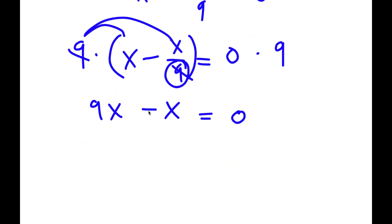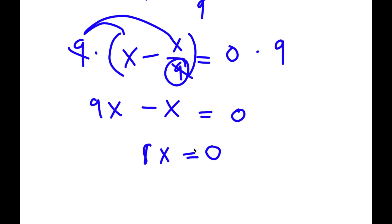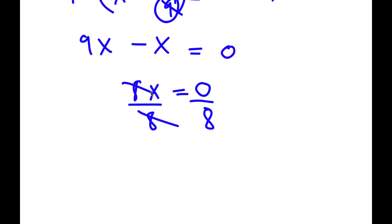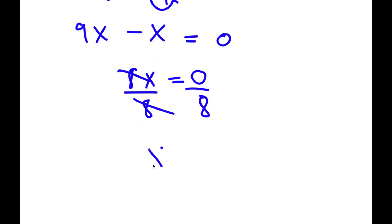Now I have 9x minus x is equal to 0. 9x minus x is 8x, so I have 8x is equal to 0. All I have to do is divide both sides by 8. These two cancel out, and now I have x is equal to 0 divided by 8, which is 0.